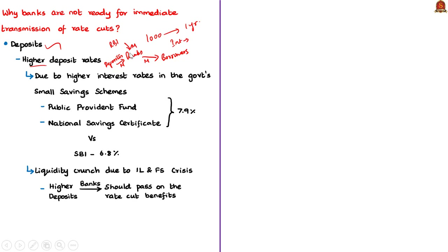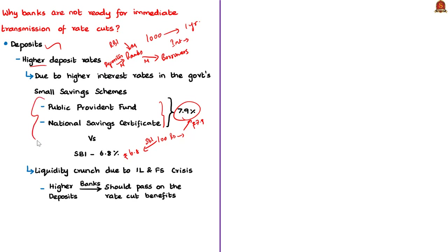To attract more deposits during the liquidity crunch, banks kept deposit rates high. The news article mentions that the liquidity position has since improved due to RBI intervention. Banks need continuous deposits from individuals to have enough money to lend to borrowers and businesses — this is why they keep both deposit rates and lending rates high.